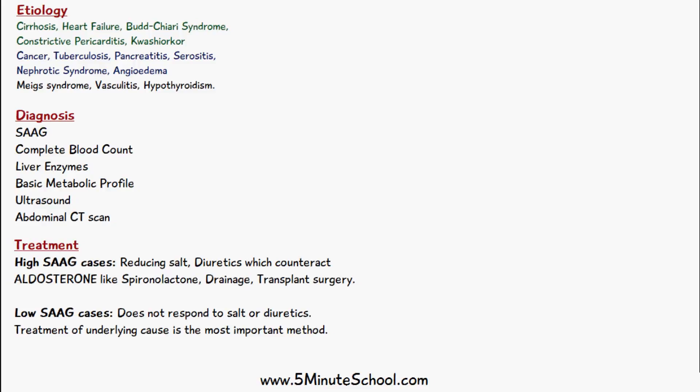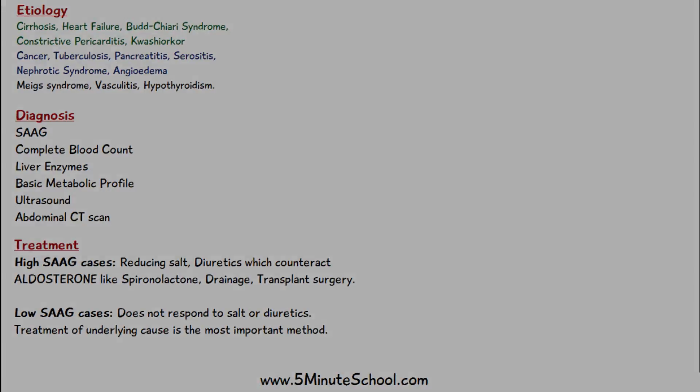For treatment of high SAAG ascites — transudate fluid caused by portal hypertension — approaches include reducing salt intake and taking diuretics that counteract aldosterone, since aldosterone increases sodium retention and potassium excretion. Drugs like spironolactone, which counteracts aldosterone, are useful. Drainage and transplant surgery are also considered. In low SAAG cases with exudate fluid, the ascites does not respond to salt restriction or diuretics, so treating the underlying cause is the most important method.